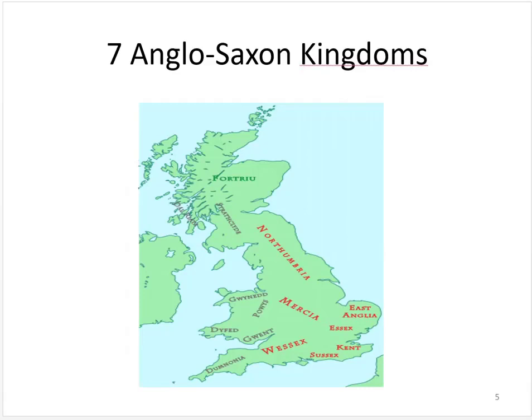England was divided into seven kingdoms, as can be seen here on this map. Many of these names are still used today, such as Northumbria, East Anglia, Essex, Kent, Sussex, and Wessex. This was the real beginning of the English language, as the Anglo-Saxons spoke a Germanic language, which left its mark on everyday words that are still used today.